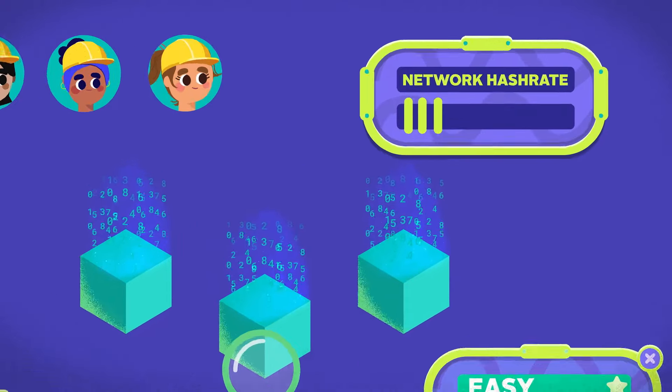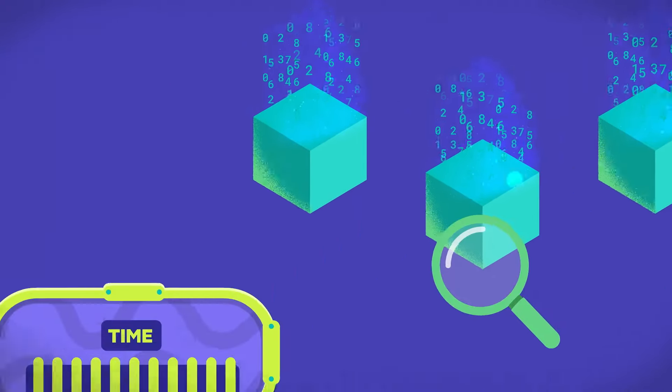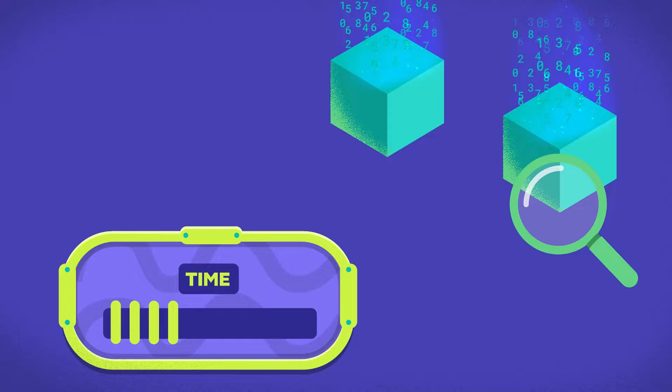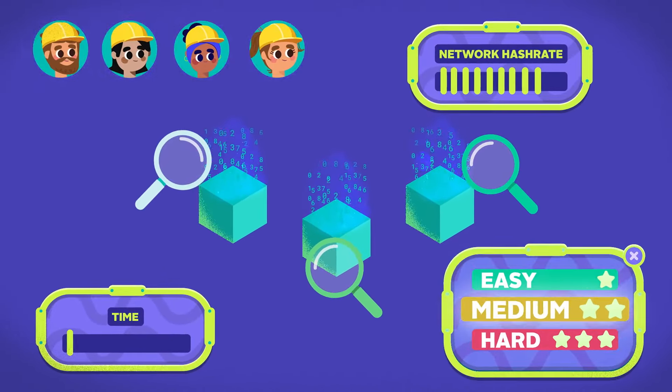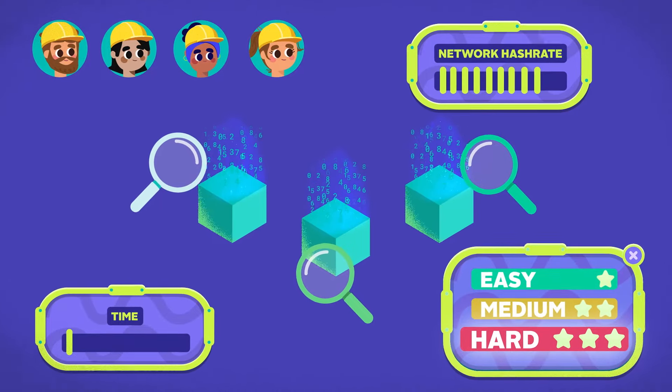For example, if more miners join and network hash rate increases, the average time needed to find the valid hash would reduce as there would be more computational power put into the guessing game. The difficulty would then be adjusted upwards.